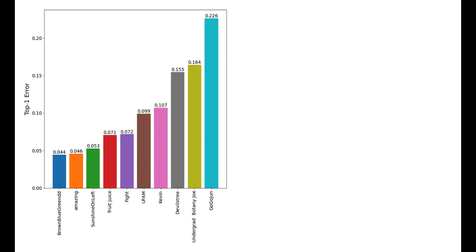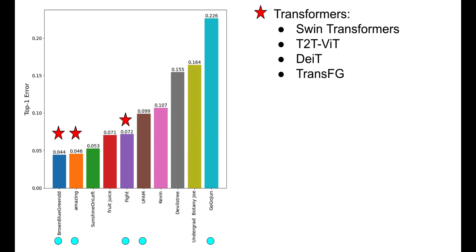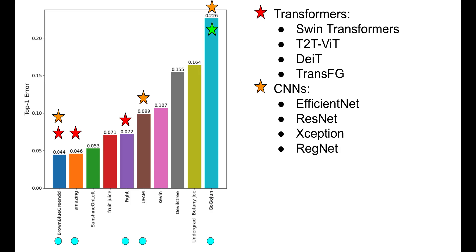We asked the competitors to describe their final solutions, and these teams submitted descriptions. Transformer architectures are gaining popularity in the vision community, and of the teams that described their method, the top three employed some sort of transformer architecture in their solution. CNNs are still present, and the top team had an ensemble with transformers and CNNs.